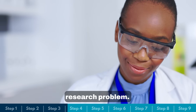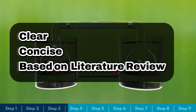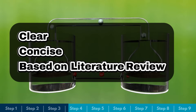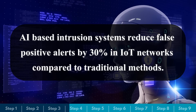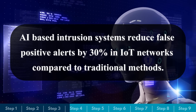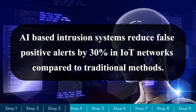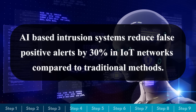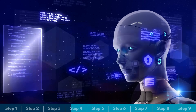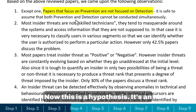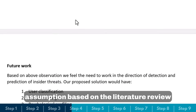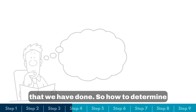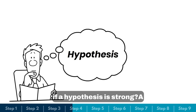A hypothesis is a testable statement that provides a potential answer to your research problem. It should be clear, concise, and based on your literature review. For example: 'AI-based intrusion systems reduce false positive alerts by 30% in IoT networks compared to traditional methods.' This is a hypothesis — an assumption based on the literature review you have done.